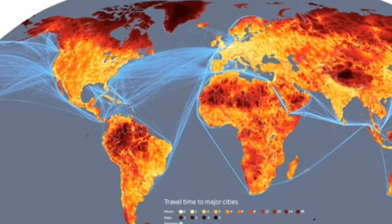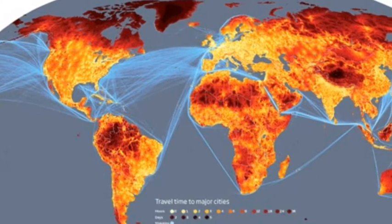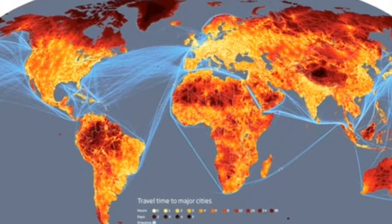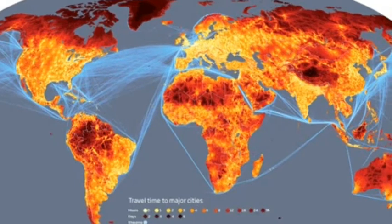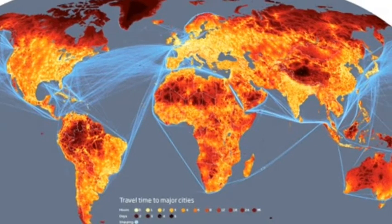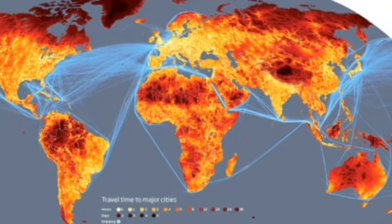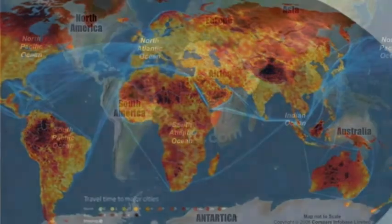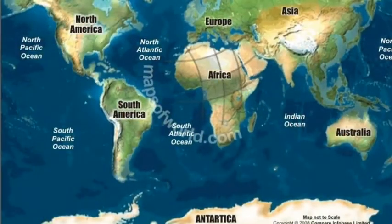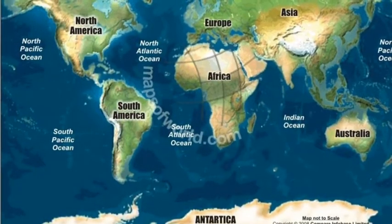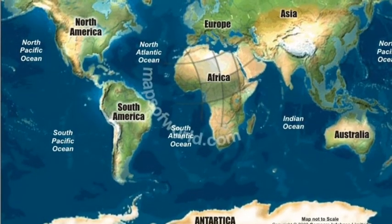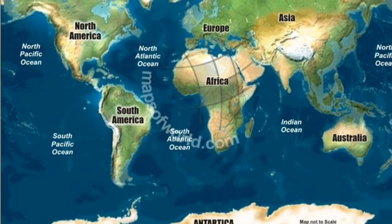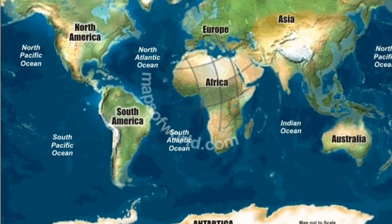More than two-thirds of the world's inhabitants are clustered in four regions: East Asia, South Asia, Southeast Asia, and Europe. Nearly one-fourth of the world's population is in East Asia, which includes the nation of China — the most populous country.